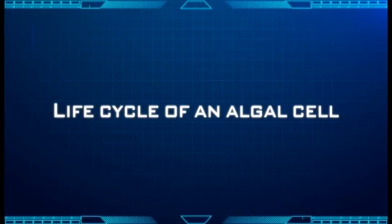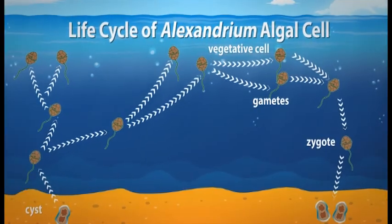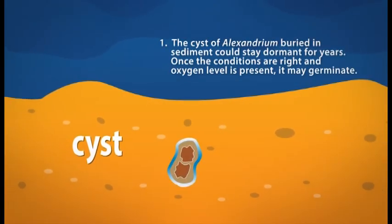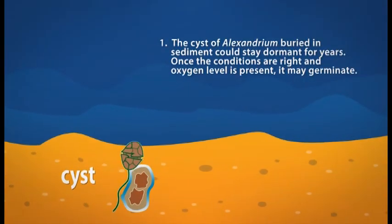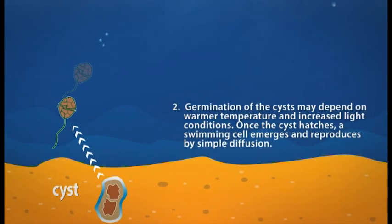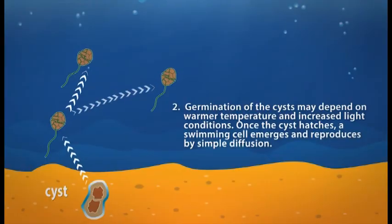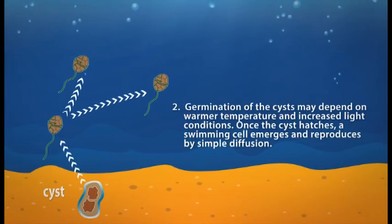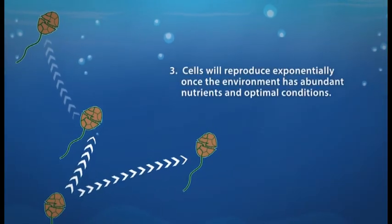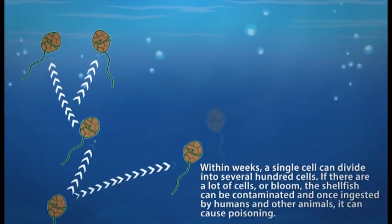Life cycle of an algal cell. We will be taking a quick look at the life cycle of an Alexandrium algal cell. Step 1: The cyst of Alexandrium buried in sediment could stay dormant for years. Once the conditions are right and oxygen is present, it may germinate. Step 2: Germination of the cyst may depend on warmer temperature and increased light conditions. Once the cyst hatches, a swimming cell emerges and reproduces by simple division. Step 3: Cells will reproduce exponentially once the environment has abundant nutrients and optimal conditions. Within weeks, a single cell can divide into several hundred cells.